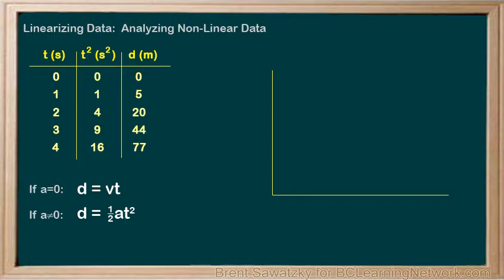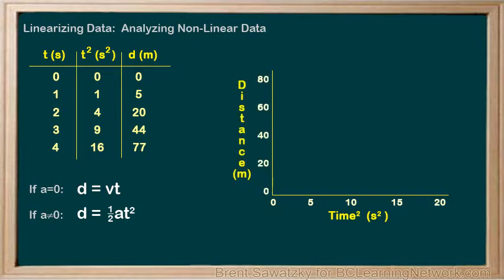Our horizontal axis is now time squared, redoing our scale to cover the new x values, and our vertical axis is still d, same scale. So now we can plot our data. And plotting our new data and voila, it's linear. This is linearizing our data. Taking nonlinear data and recognizing a pattern that's nonlinear and adjusting one of the variables to make it a linear relationship and then regraphing.